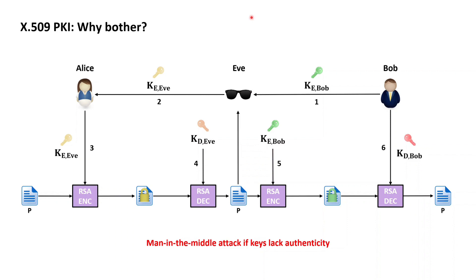This is a classic example of a man-in-the-middle attack, possible if keys lack authenticity, and is a main argument as to why it is necessary to ensure that keys used for cryptographic purposes are authentic, and why it is necessary to be able to completely trust X509 PKIs — which essentially means trusting the X509 PKIs to accurately bind public keys to end entities, ultimately establishing the authenticity of the public keys obtained and used.